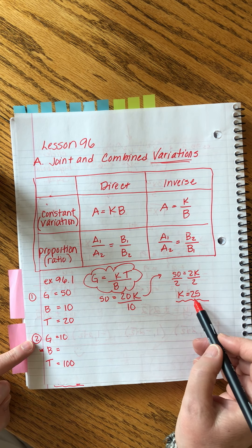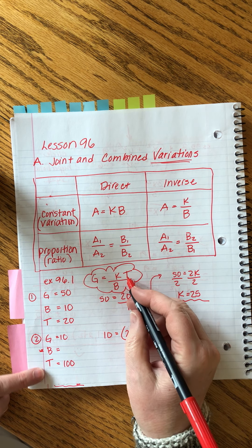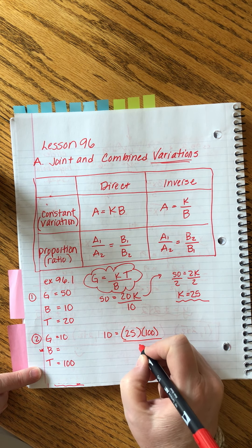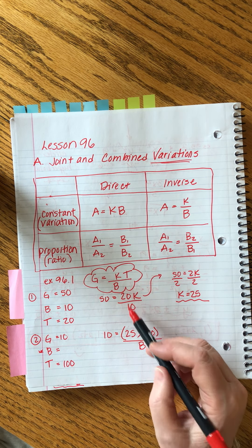Our mystery: how many boys were there when there were 10 girls and 100 teachers? We're using the variation form. Here's our formula — plug in scenario one to solve for k. We get 50 equals 20k divided by 10.